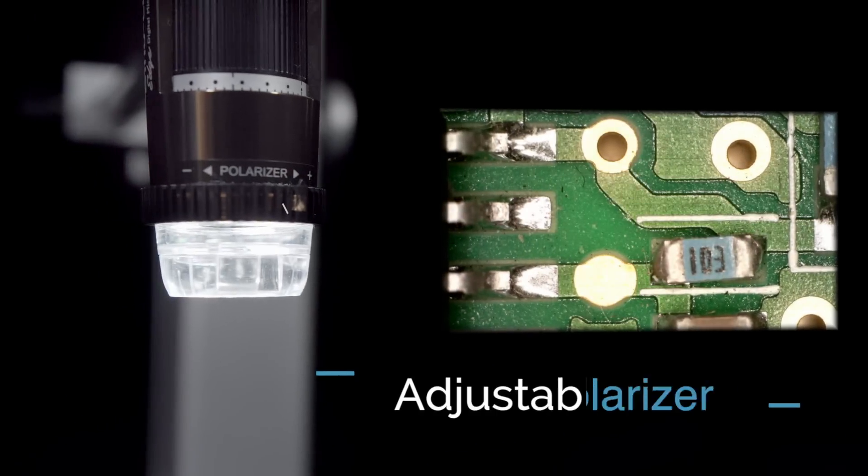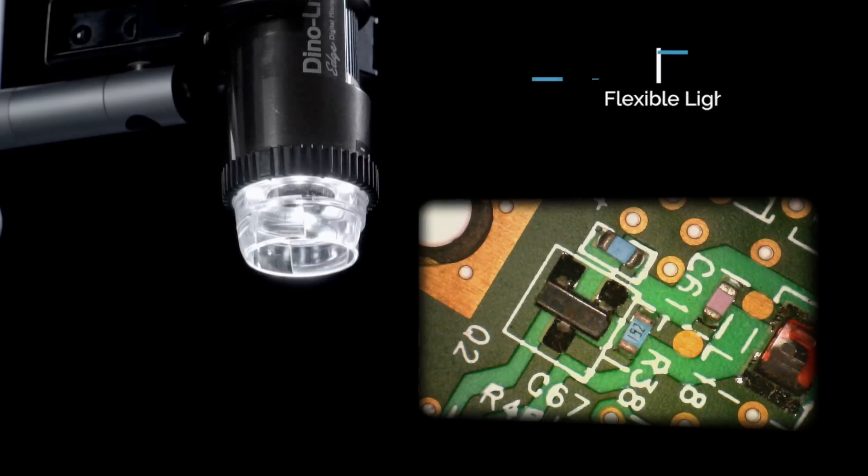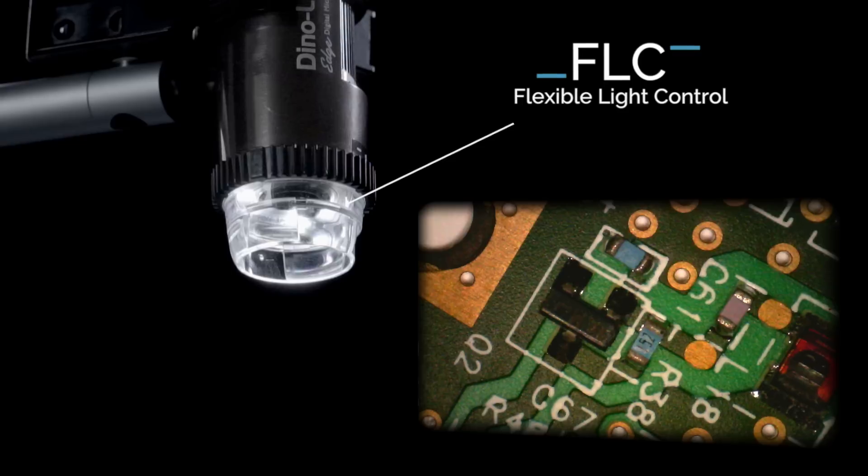The built-in variable polarizer helps to deal with glare when viewing reflective surfaces, and flexible light control allows you to control the brightness of the LEDs or control individual LED quadrants.